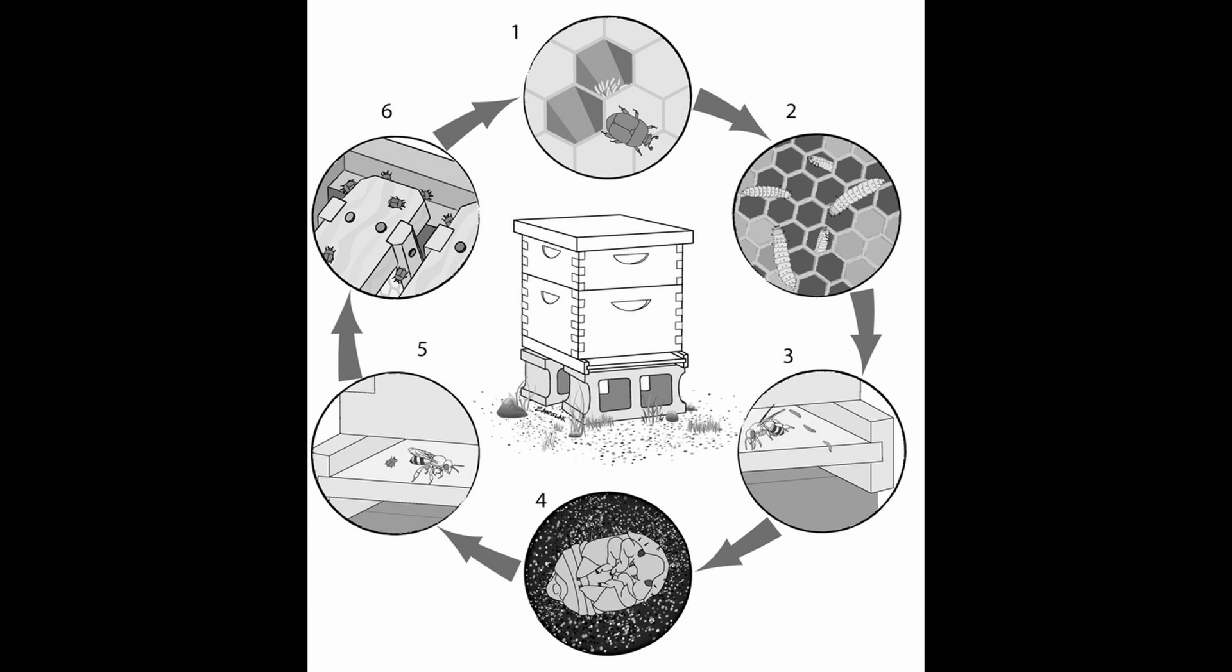And number six is where they begin the havoc within the hive. That's the cycle that you will see when it comes to small hive beetles.